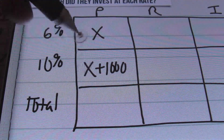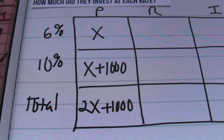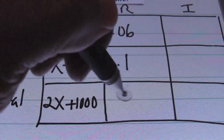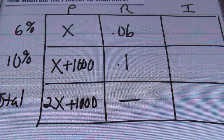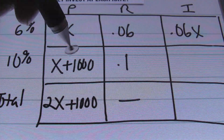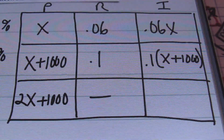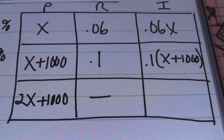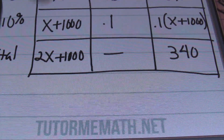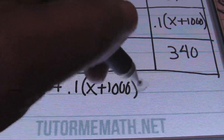We don't know how much was invested at 6%, so that's X. The second investment is $1,000 more, so the principal at 10% is X + 1,000. The total principal is 2X + 1,000. Rates as decimals: 6% = 0.06, 10% = 0.10. Multiplying across: 0.06X and 0.10(X + 1,000). The total interest is $340. The equation is: 0.06X + 0.10(X + 1,000) = 340.